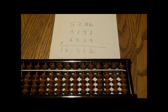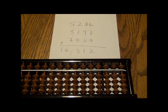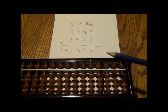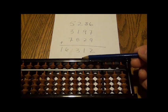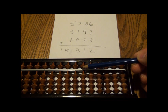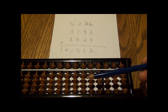Soroban is the Japanese abacus and it's a little different from the Chinese abacus. The Chinese abacus has two beads above this bar and five beads below.